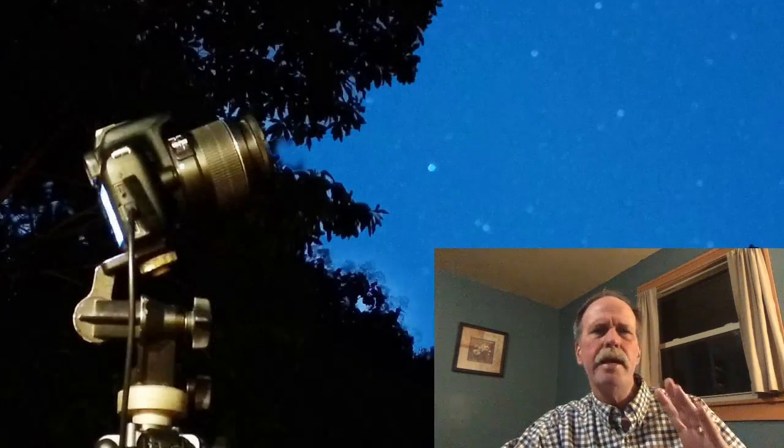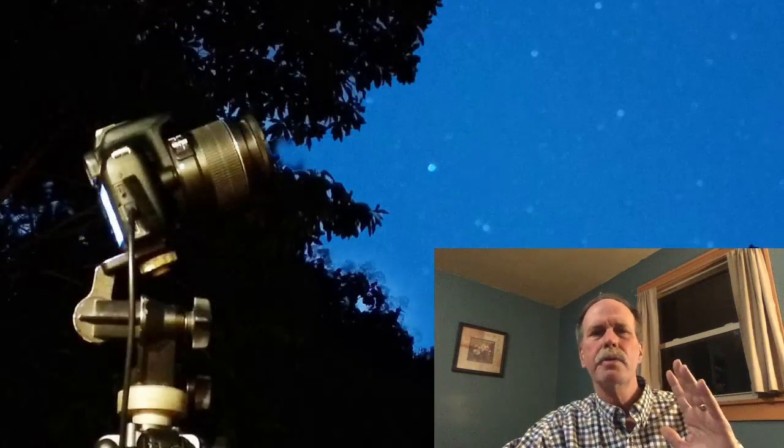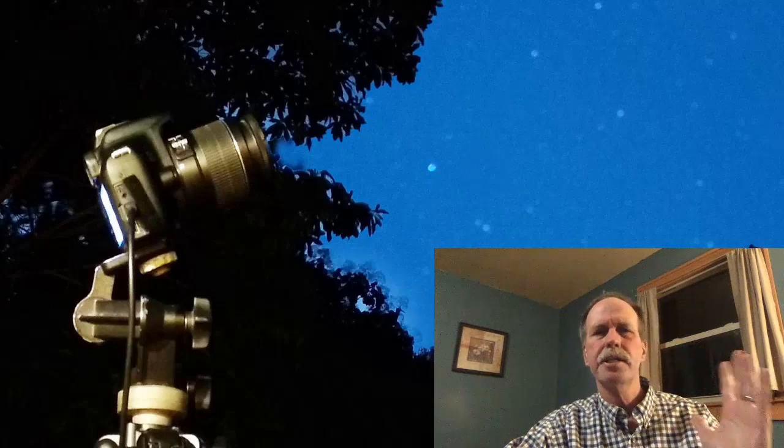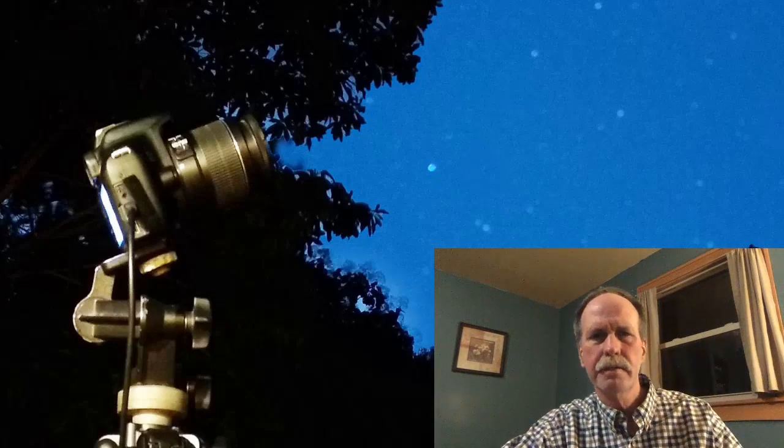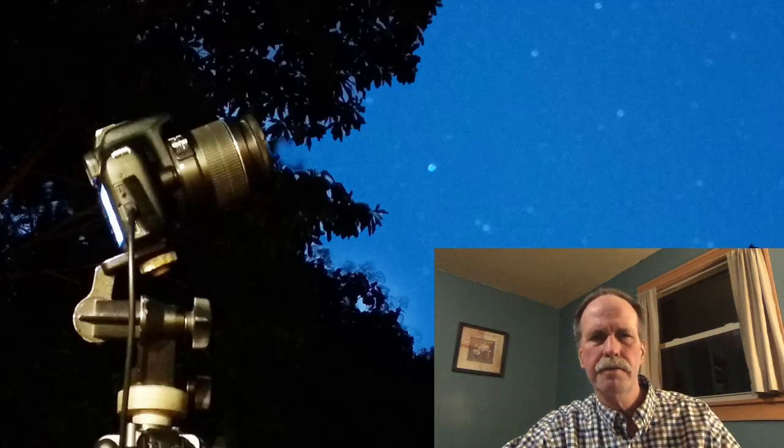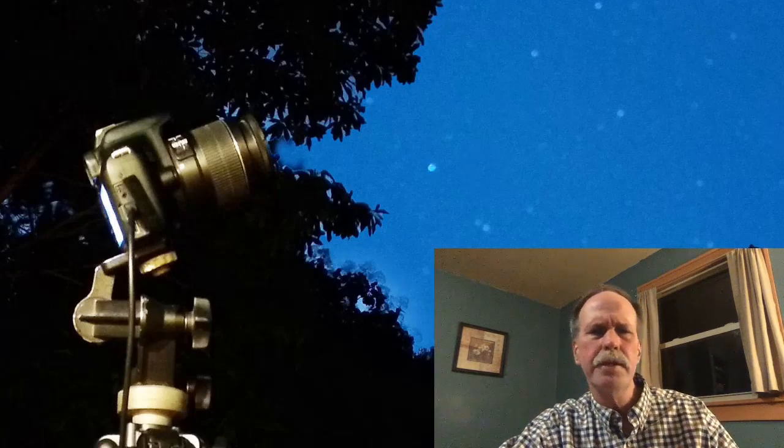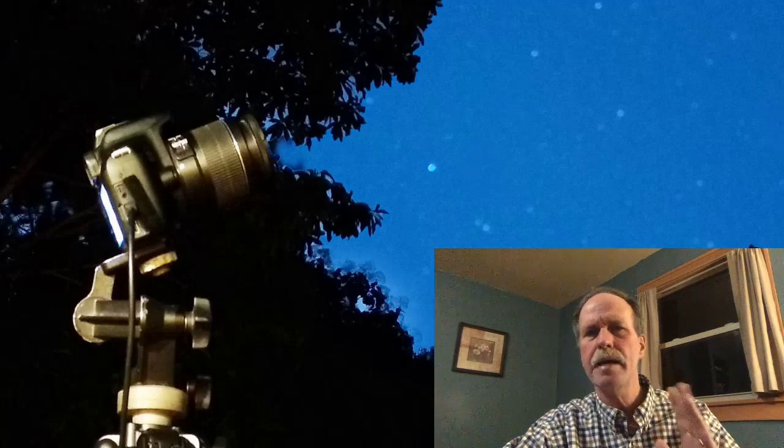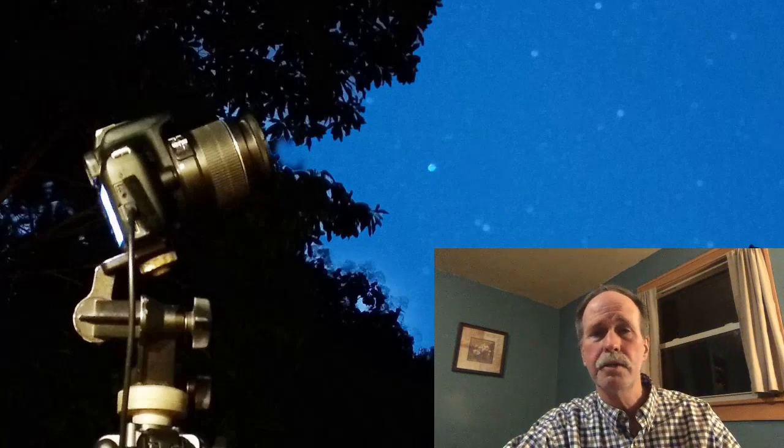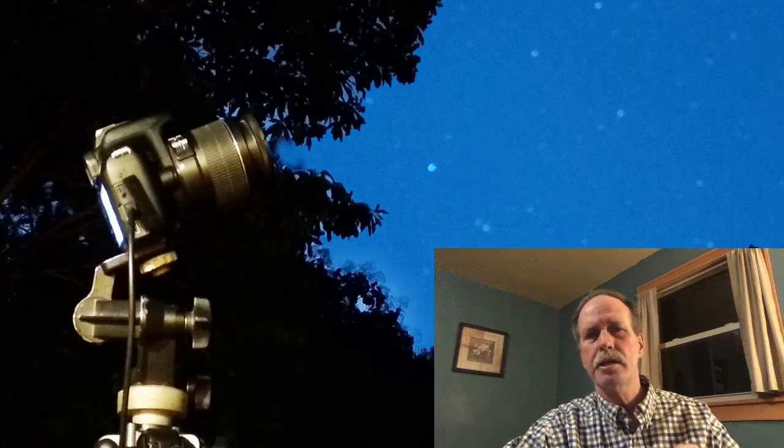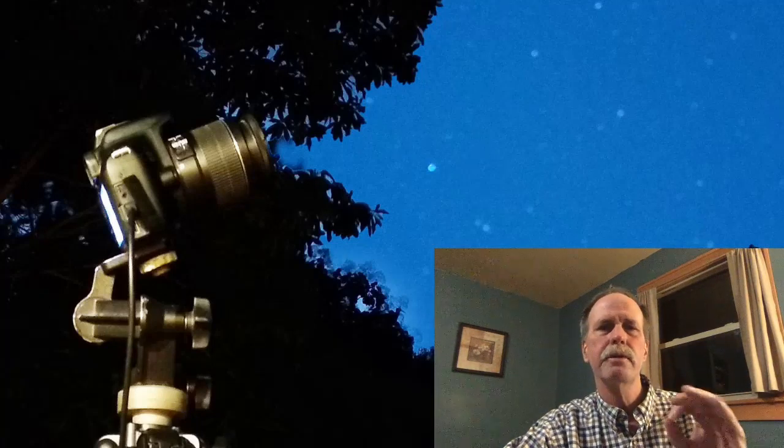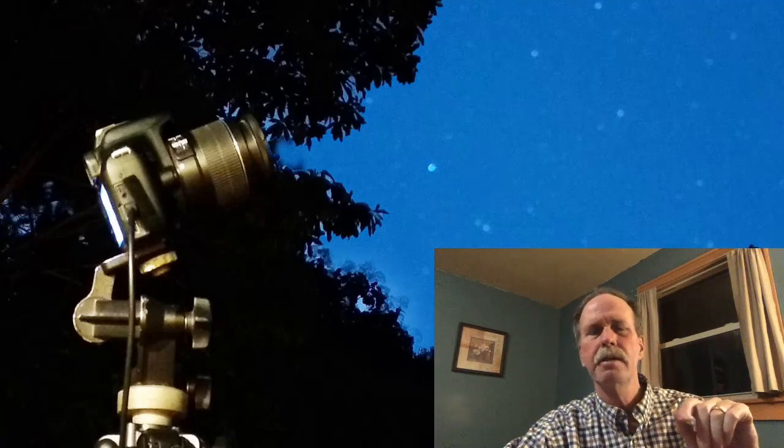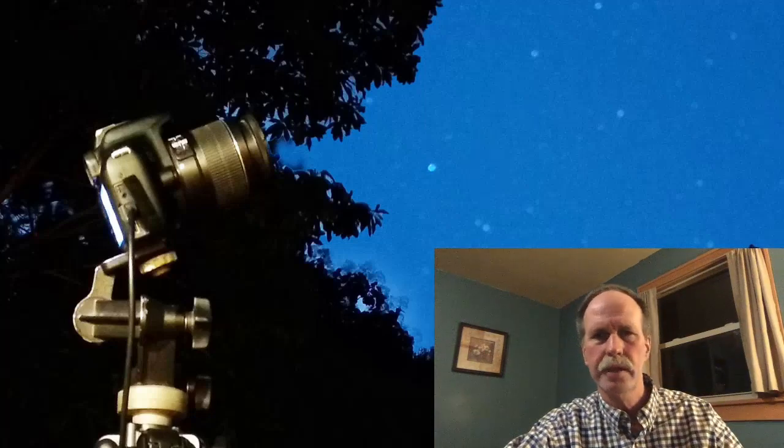If we have a camera mounted on an equatorial mount and we're rotating that mount in right ascension to match the rotation of the Earth, all we're going to get is a star field. We're not going to get any star trails. However, if we put the camera on a standard tripod and point it more or less towards the north, we will get star trails with a time exposure, and those circular star trails will be centered on the northern celestial pole.